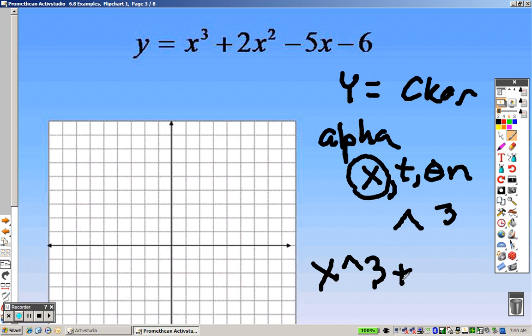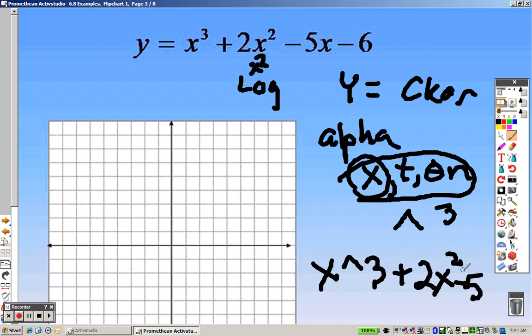Then, you can do plus two. And then, again, you press that button, that'll give you your X. We do have the squared key. You guys know where the squared key is. It's right above the log. There's a little two like that. An X to a two. That'll give you squared. So, X squared. And then, we want minus five X and minus six. Okay, so after you type in all that.